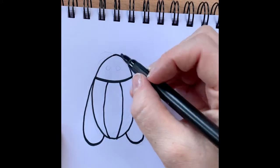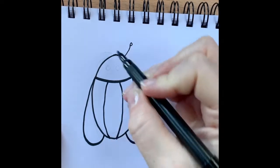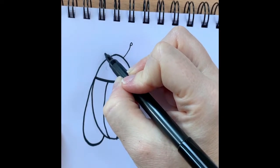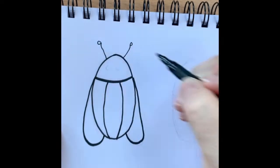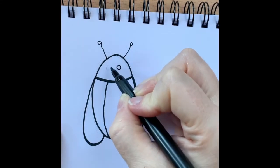We're going to start to add all the details in there. We're going to draw some antennae, so we're going to go up and a wiggly circle. A line and another circle. We're going to add an eye, a circle here.